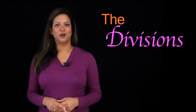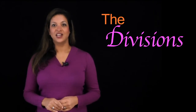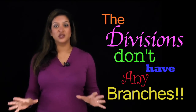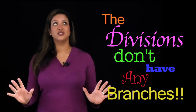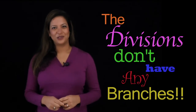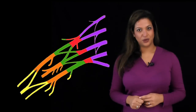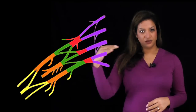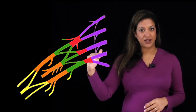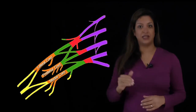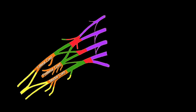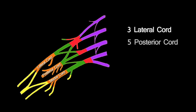The divisions of the brachial plexus don't have any branches at all — thank goodness. Now, on to the cords. There are three cords: lateral, posterior, and medial, and they have three, five, and five branches respectively — 3, 5, 5.